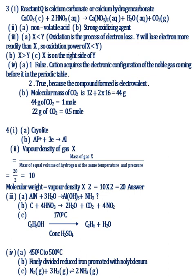Question 4. Part 1: A Triolite, B Equation is given. Part 2, Answer 20. Part 3: A Equation is given, B Equation is given, C Equation is given. Part 4: A 450 degrees centigrade to 500 degrees centigrade, B Finely divided reduced iron promoted with molybdenum, C Equation is given.